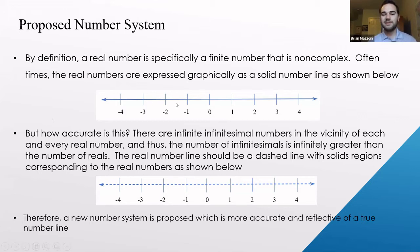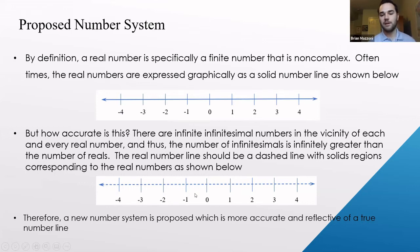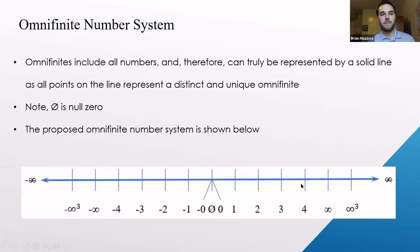With the new number system, a new number line is needed. A real number is specifically a finite, non-complex number, typically shown on a solid number line — but this is inaccurate, since there are infinite infinitesimals near every real number, making the number of infinitesimals vastly greater than the number of reals. The number line should actually be dashed with solid regions at real numbers. The proposed omni-finite number line is a truly solid line, since it includes all numbers and every point represents a distinct omni-finite.